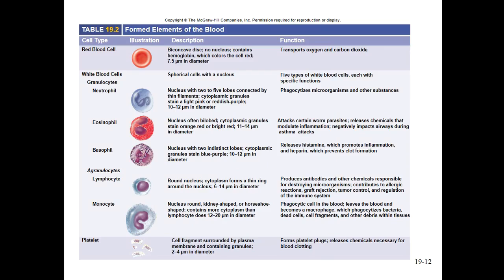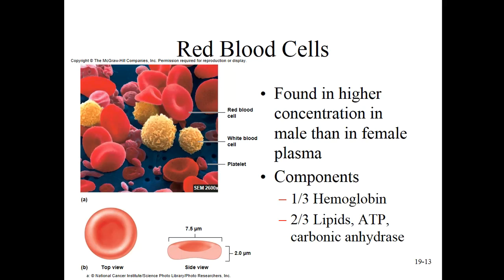Here's another great summary table — good flashcard material — summarizing what the different types of formed elements do. Let's focus on each individually. Here's the red blood cell; here's what I mean by a bi-concave disc. The cool thing about the shape of this cell is that it allows the shell to fold.